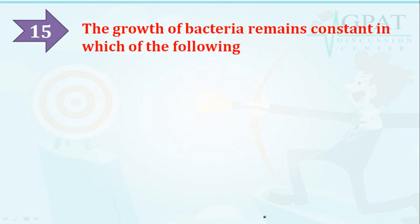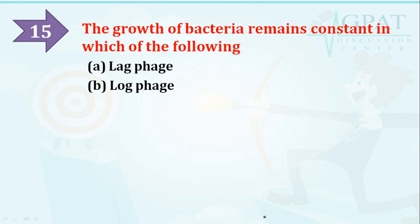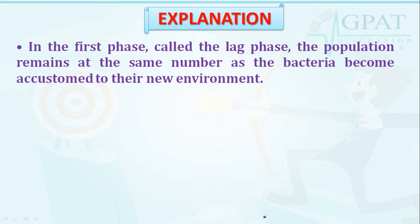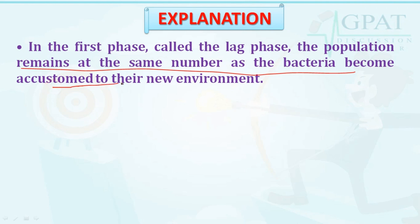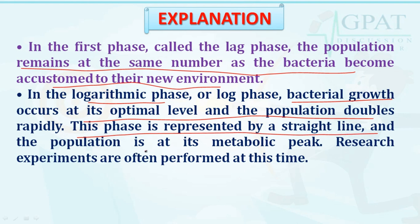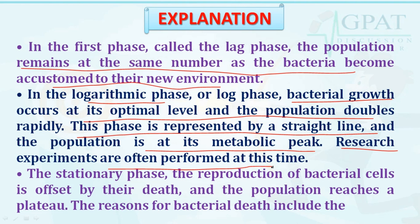Question number fifteen: the growth of bacteria remains constant in which of the following phases — lag phase, log phase, stationary phase, or decline phase? The right option is the lag phase. In the lag phase, the population remains at the same number as the bacteria become accustomed to their new environment. In the log phase, bacterial growth occurs at its optimal level and the population doubles rapidly — represented by a straight line, the population is at its metabolic peak and research experiments are often performed at this time. In the stationary phase, reproduction of bacterial cells is offset by their death and the population reaches a plateau.